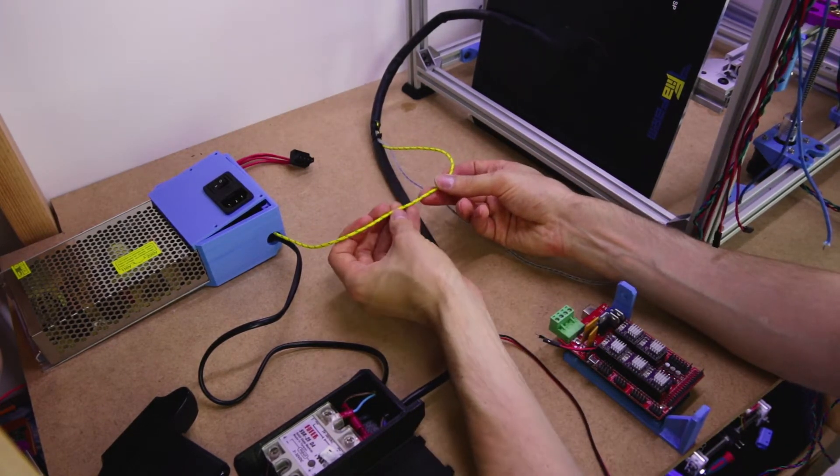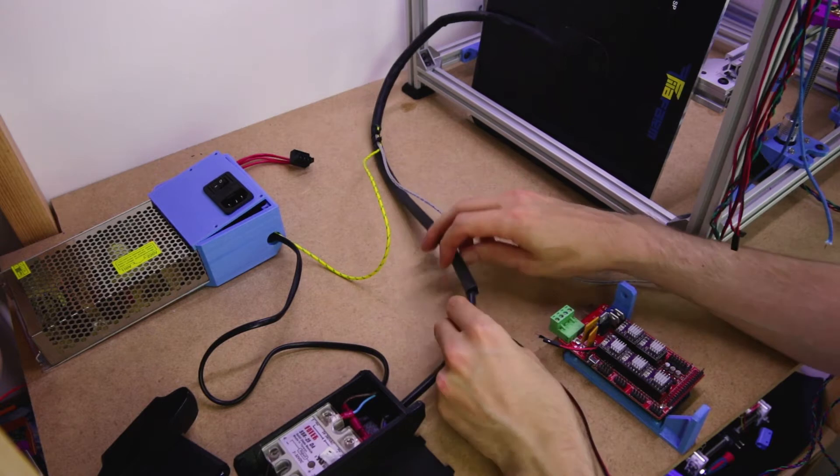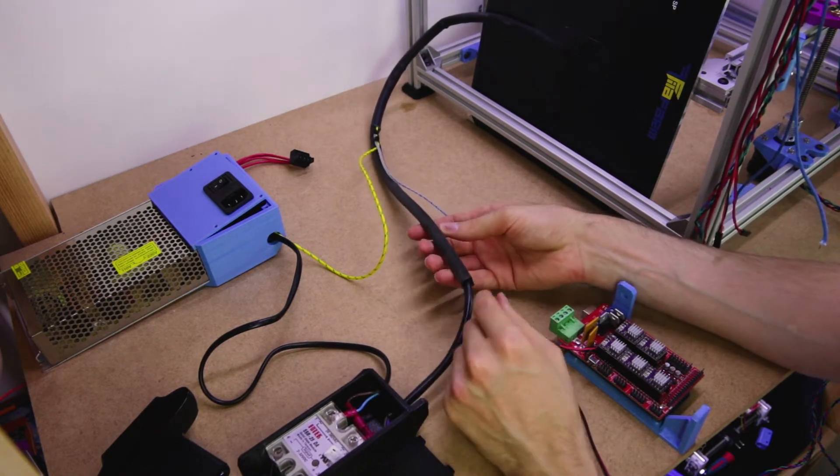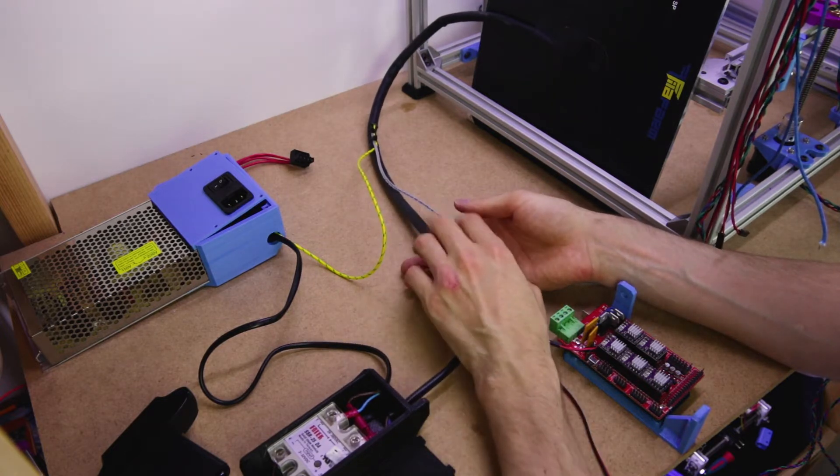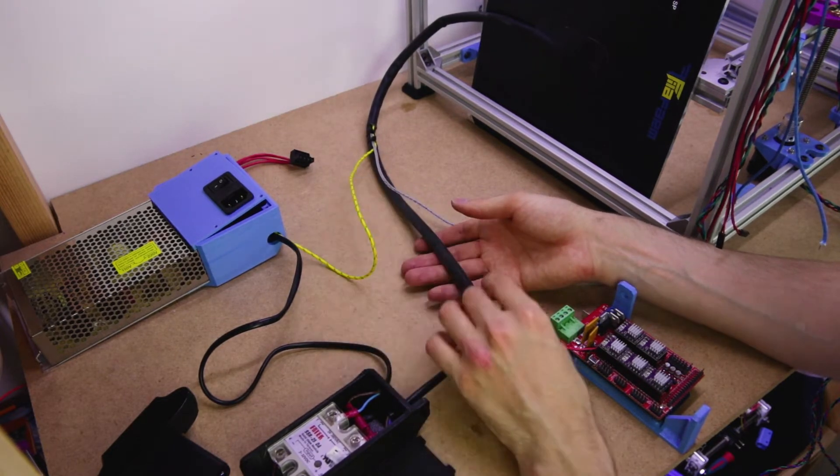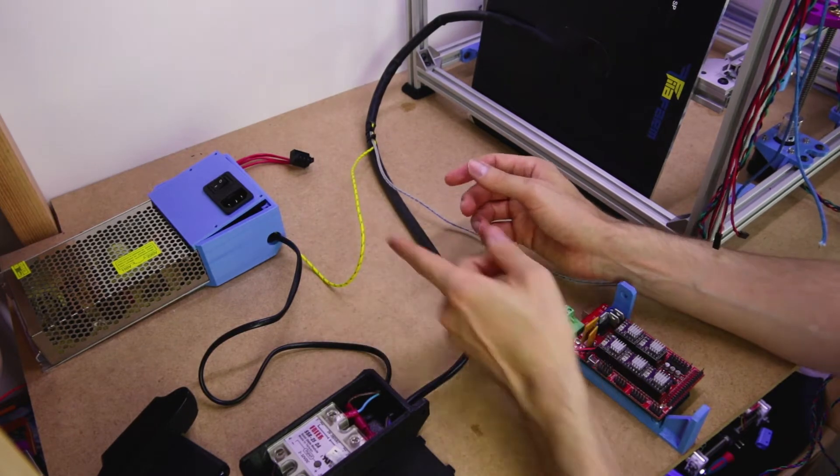And next you have the ground wire, this is a single wire, and lastly you have the live and neutral, which in Europe, or is it just the UK? Well in the UK it's brown and blue and the earth is yellow green, always yellow and green actually.